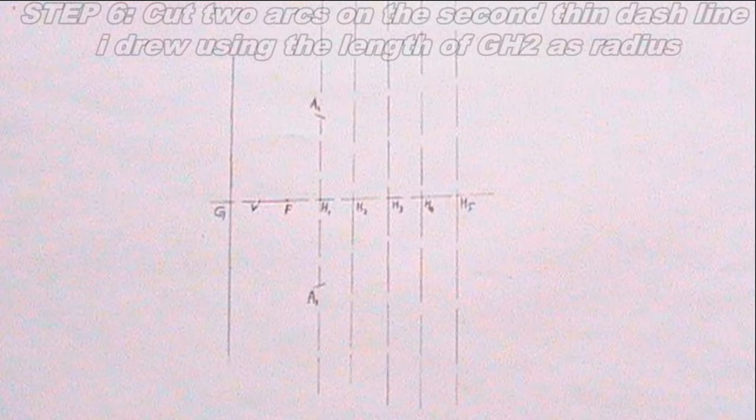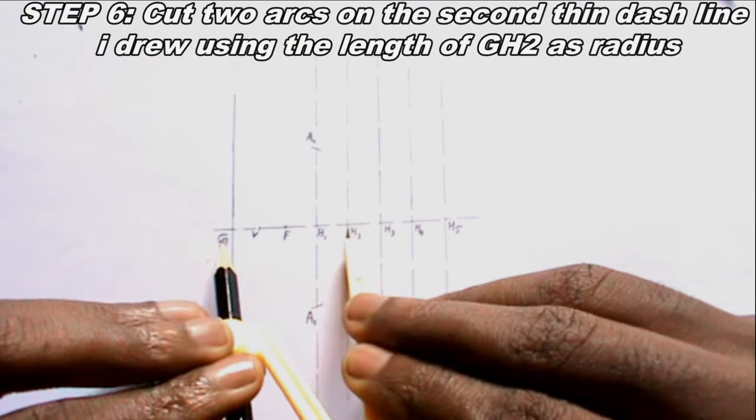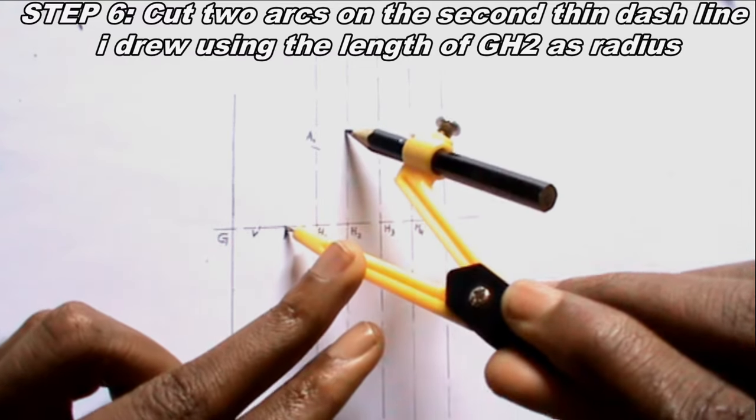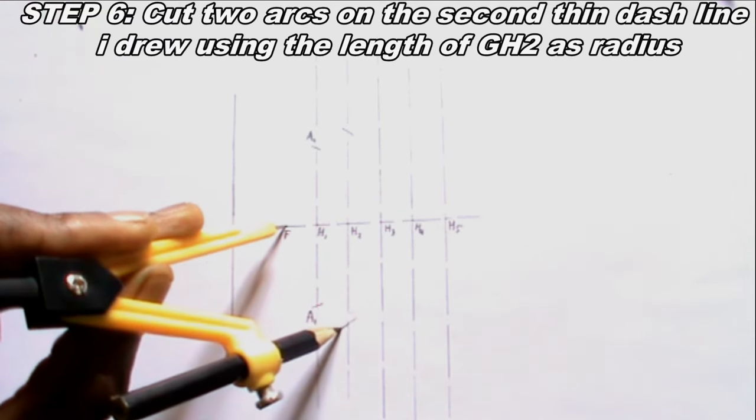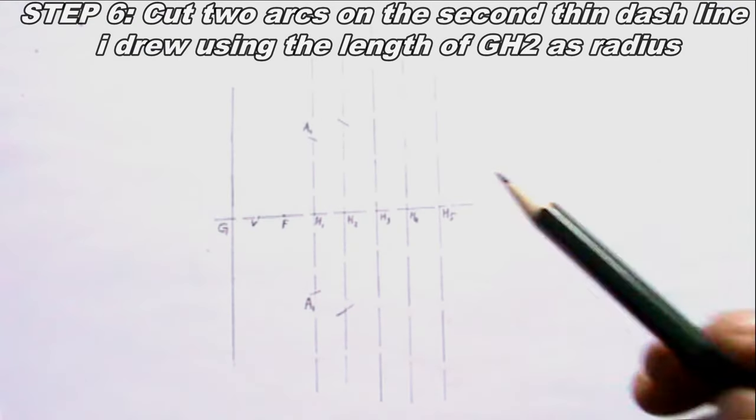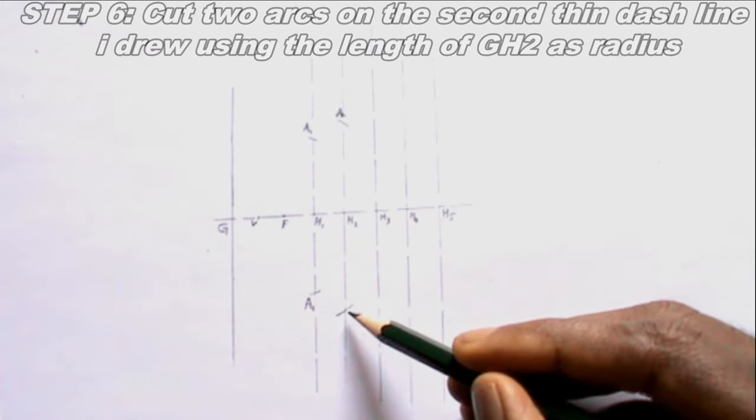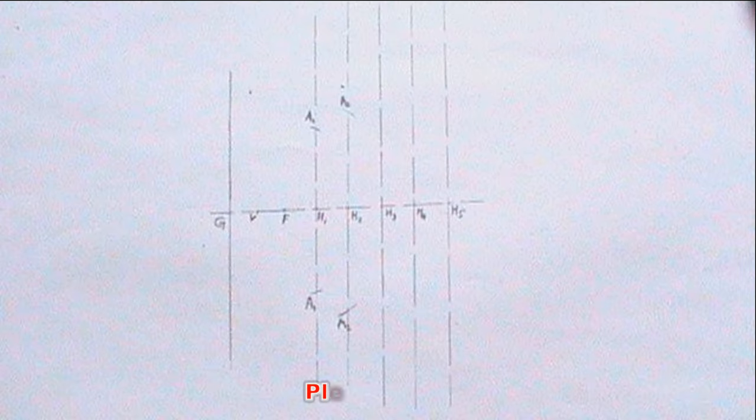Now I will repeat the same procedure for the second thin dash line, but this time I will use radius GH2 and I label the point where the arc intersects the line A2. I will continue with this procedure for the remaining thin dash lines.